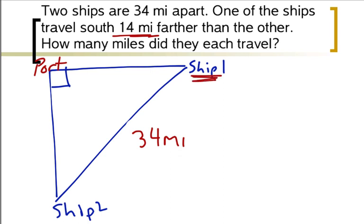It traveled a certain distance. It's the other one, so we'll call it X, because the ship that traveled south went 14 miles farther. So it went the same distance as ship 1, plus another 14.